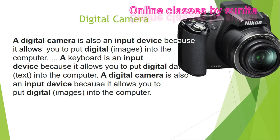The next input device is the digital camera. A digital camera is also an input device because it allows you to put a digital image into the computer. Similarly, a keyboard is an input device because it allows you to put digital data — in the form of text, letters, words, sentences, and digits — into the computer. With a digital camera, you capture a photo and then transfer that digital image data to your computer.